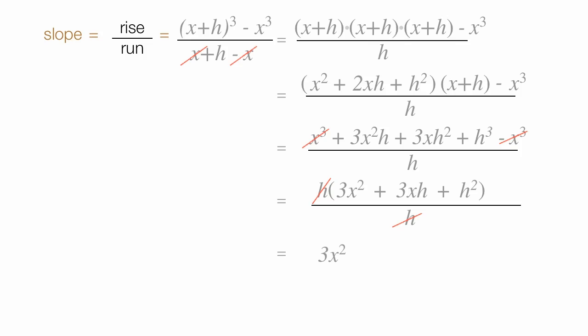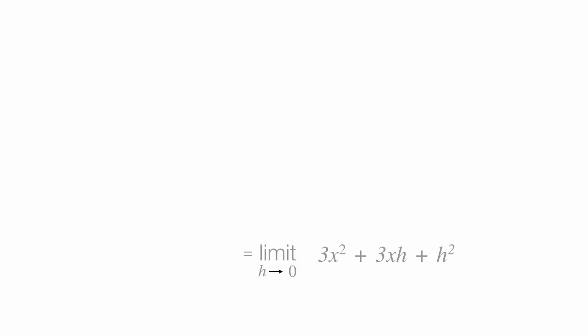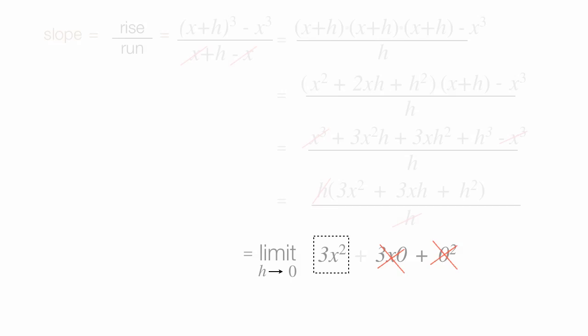I am left with 3x squared plus 3xh plus h squared, and we're almost to the end. Now I'm going to write the limit as h goes to 0. I can put 0 in for my h's, like this and this, and I can scratch those off. This leaves me 3x squared.